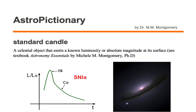A standard candle is a celestial object that emits a known luminosity or absolute magnitude at its surface. For example, if we were to go to the store and buy a 100 watt light bulb, we know that the power output at the surface of the light bulb is going to be 100 watts. In this case, our light bulb is an example of a standard candle.